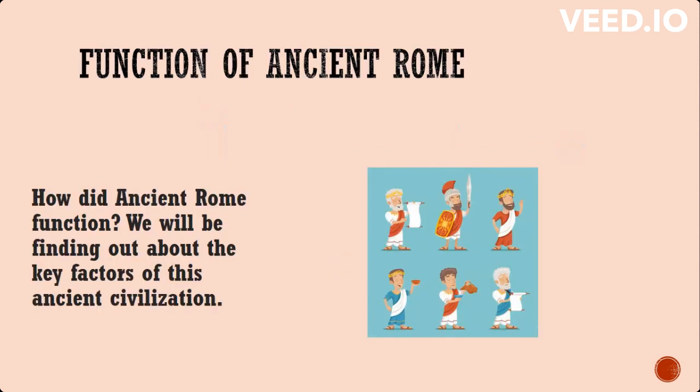Afterwards, we're going to be looking into the function of ancient Rome. We're going to see how ancient Rome functioned, and we're going to be finding out about the key factors of this ancient civilization by using our critical thinking skills and also researching different factors and characteristics of ancient Rome.